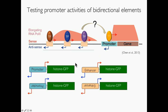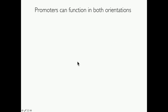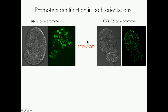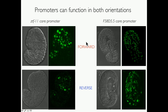What we wanted to do was clone each individual element in front of a GFP reporter, but this time in both orientations, to see if there is any bidirectional initiation of transcription in the antisense — the blue arrow. We did that with two promoters, ZTF11 and F58D5.5, and saw that they can work in the forward orientation and also in the reverse orientation.